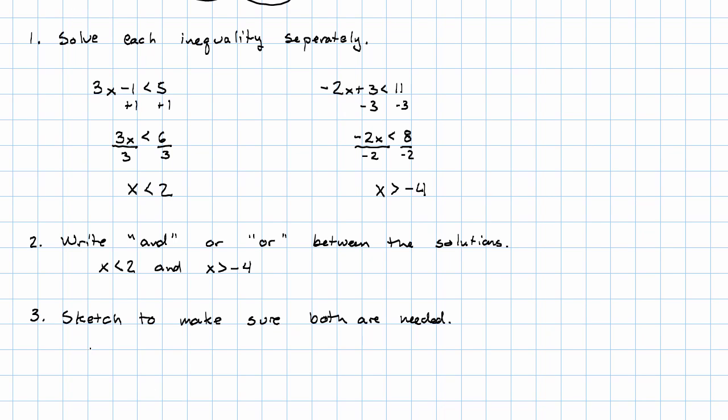In this case, so here's negative 4, here's 2. Here's x is less than 2, here's x is greater than negative 4. The word is 'and,' so we want the points that are on both. Here's my solution. So I really do need both of them, and thus, there's my answer.